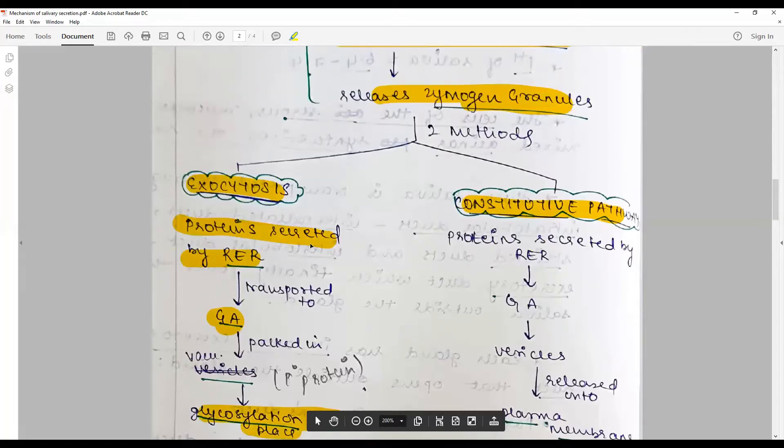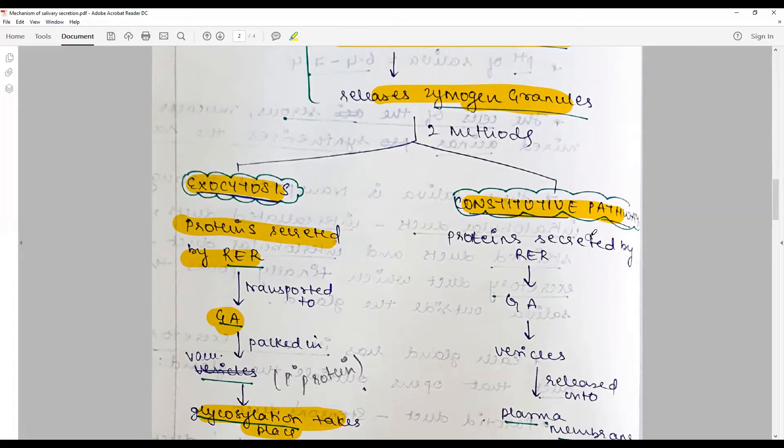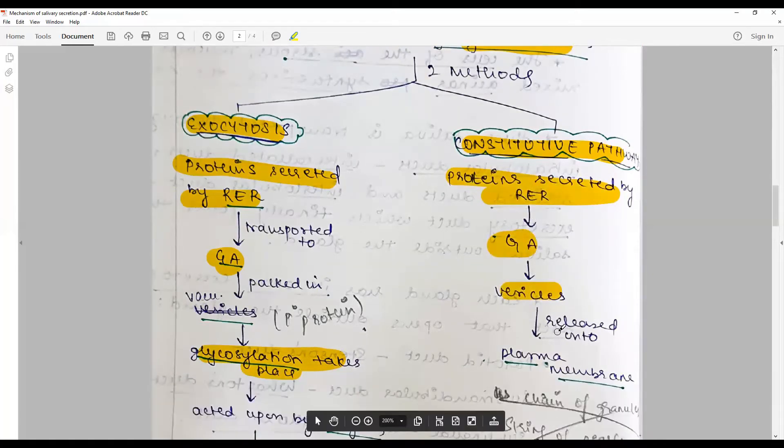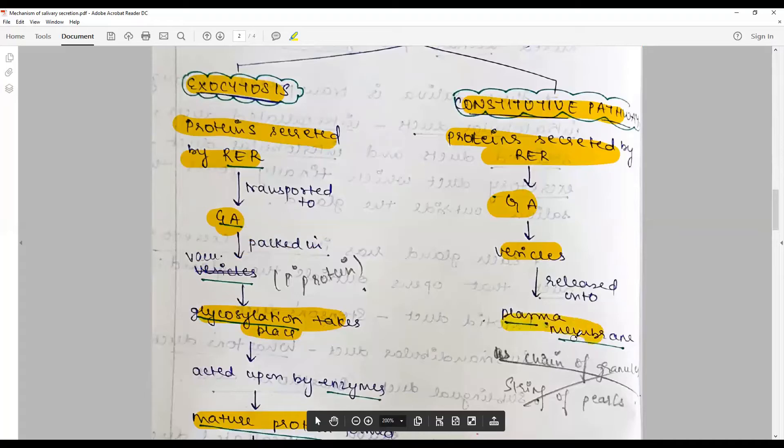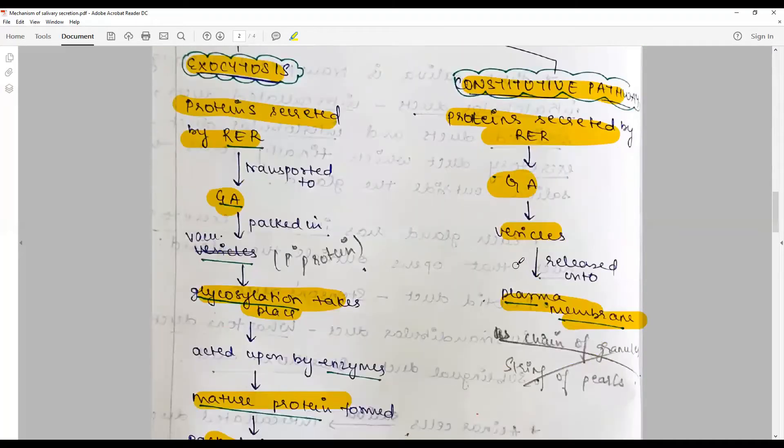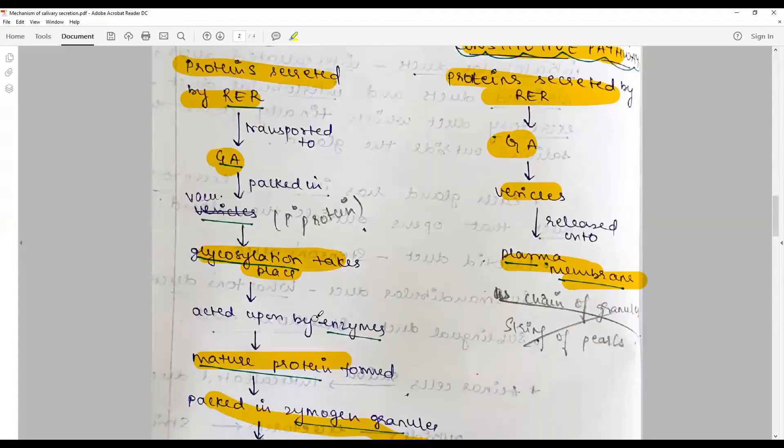For this to happen, the conclusion should be pre-made. In the constitutive pathway, it's immediate. The proteins secreted by rough endoplasmic reticulum are carried by the Golgi apparatus, secreted into vesicles, and released into the plasma membrane.